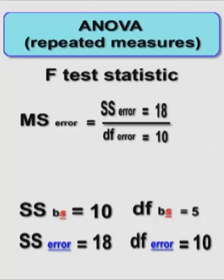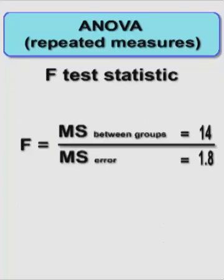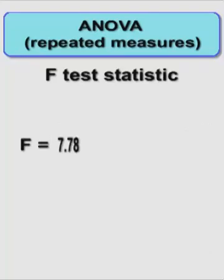Moving on to the mean square of errors, it's the sum of square of the error divided by the degrees of freedom of the error, and that looks like it's going to be that. So now we have the data we need to finally get our F-test statistic. It's 14 divided by 1.8, comes out with an F-test statistic or an F-ratio of 7.78.